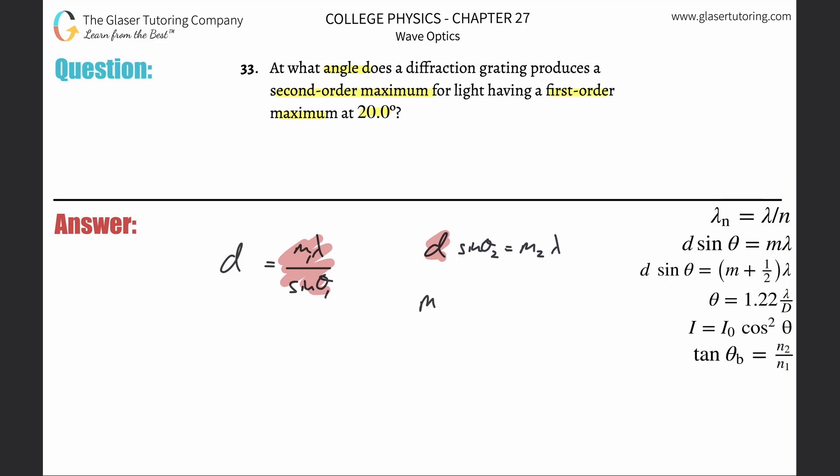What that now becomes is m1 lambda over sine theta 1 times sine theta 2 equals m2 times lambda. Now these will cancel.